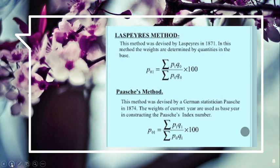Now under our Laspier's method, this was devised by Laspier in 1871. In this method the weights are determined by quantities in the base. P01 is equal to sigma P1Q0 by sigma P0Q0 into 100.